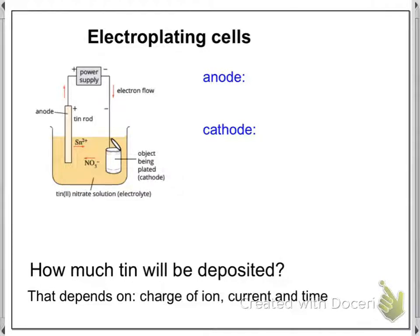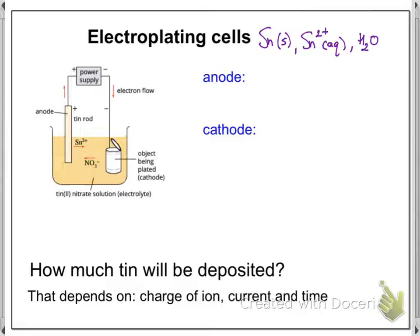Here you can see a cell set up. It has a tin anode and then it's got an object to be plated at the cathode. The questions are asking what reactions are going to occur at the anode and cathode. To do these you need to write down all the species that are available: solid tin, tin 2+ ions, and water.